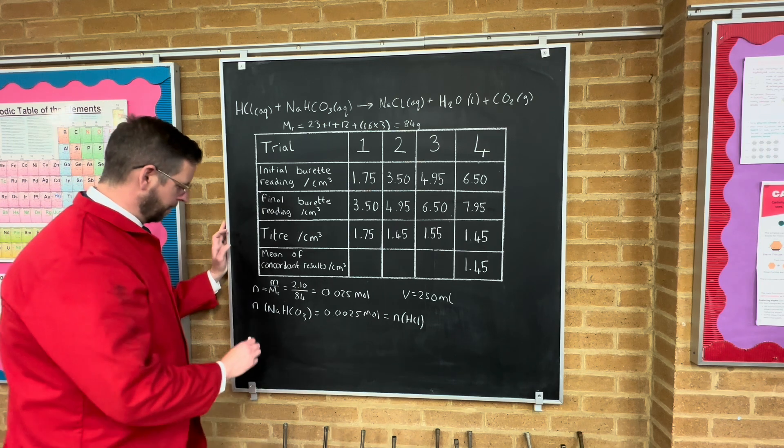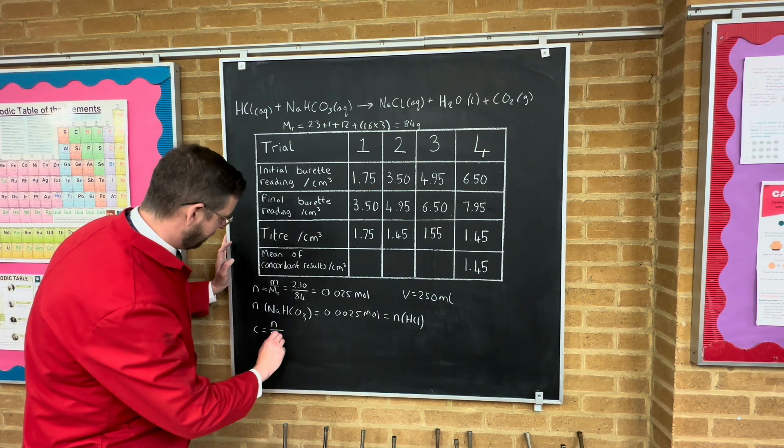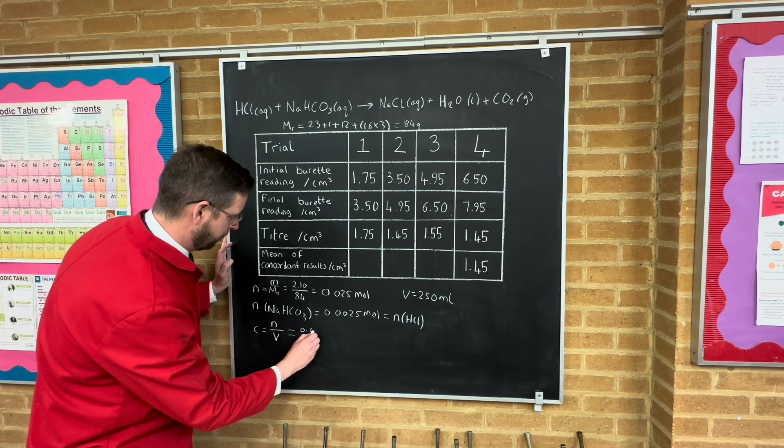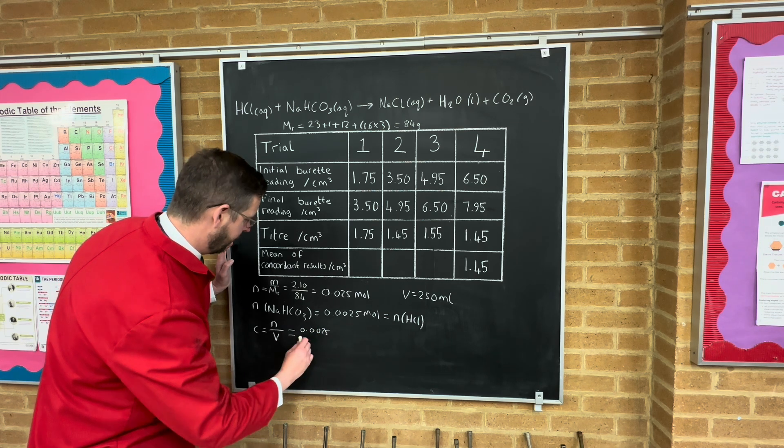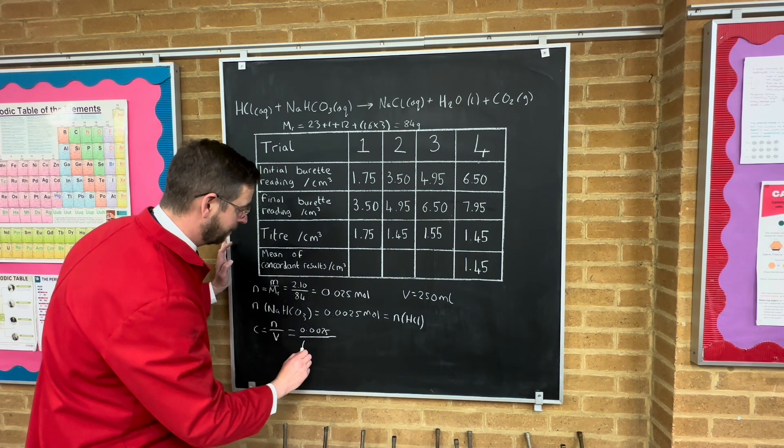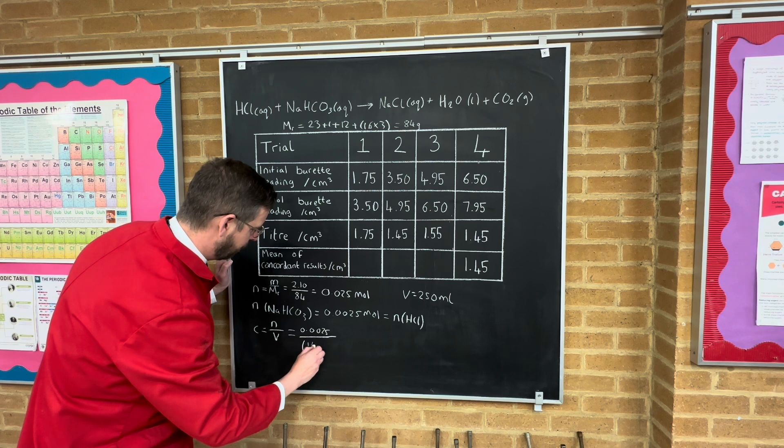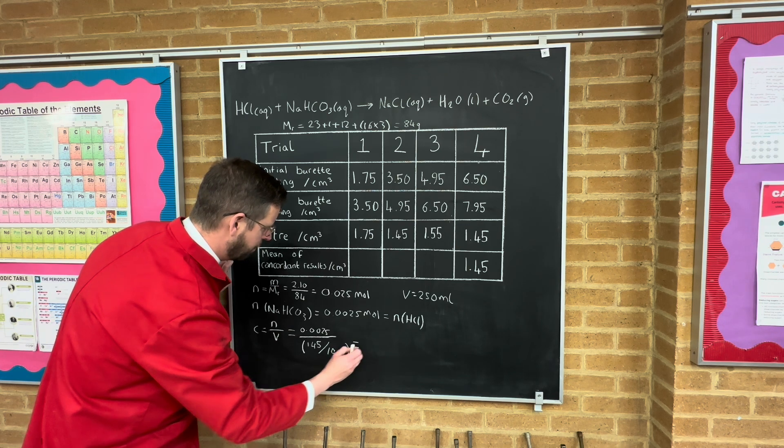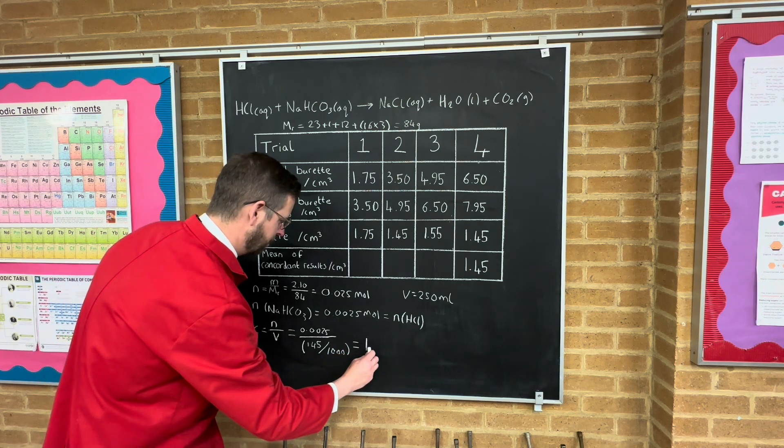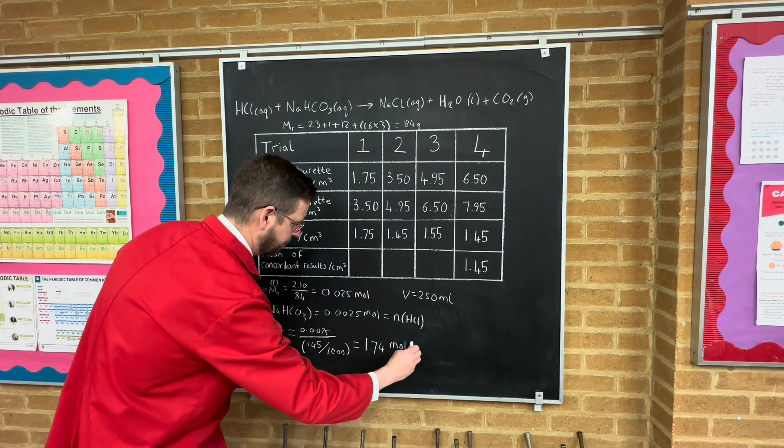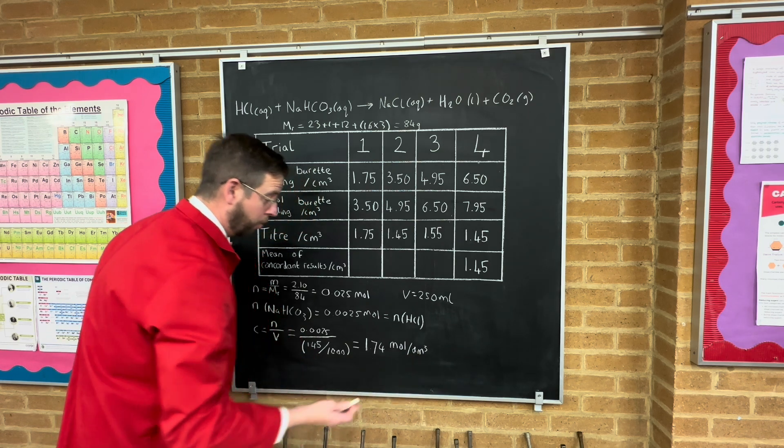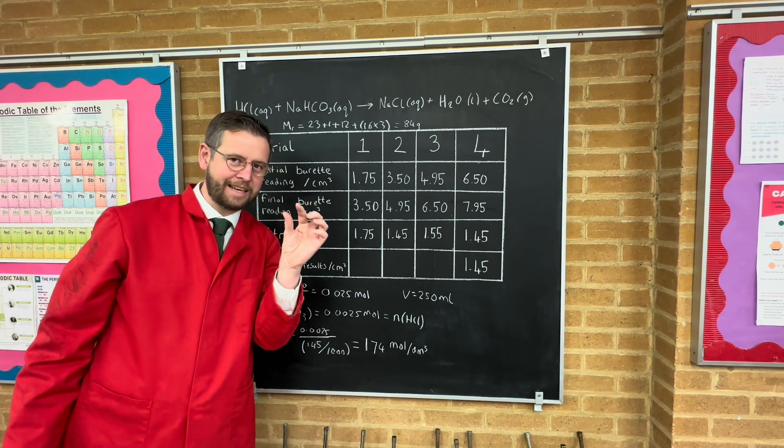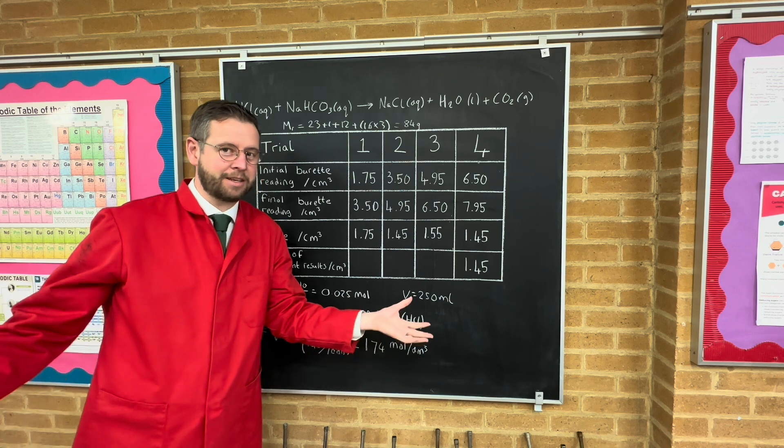So what's the concentration? We know that the concentration is given by the number of moles divided by the volume. So the concentration of our acid is going to be the number of moles, 0.0025, divided by the volume. Now this has got to be in decimeters cubed. That is of course in centimeters cubed, so 1.45 divided by 1000 puts that into decimeters cubed, equals 1.74. So it's 1.74 moles per decimeter cubed, or molar, 1.74 molar. Hence the gloves, it was strong stuff, and also why it required so little of the acid to neutralize the analyte. It was a concentrated acid.